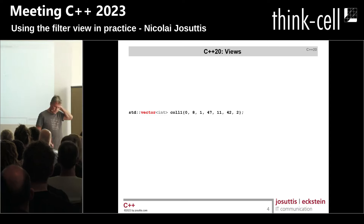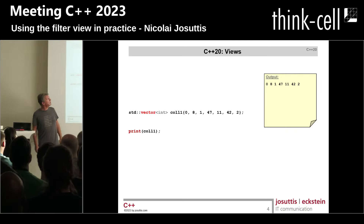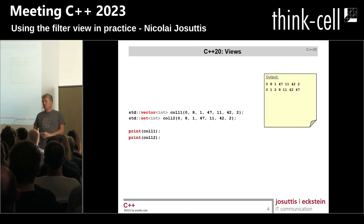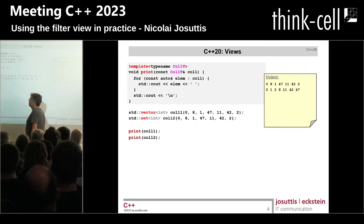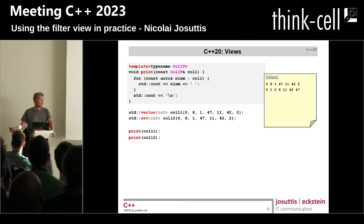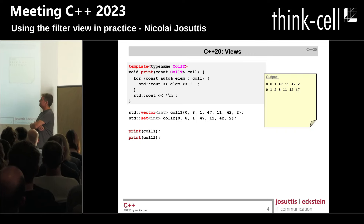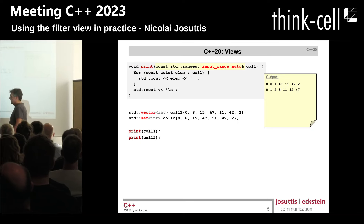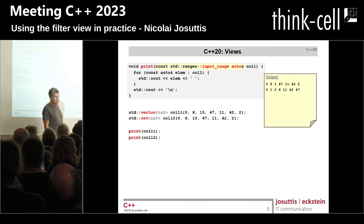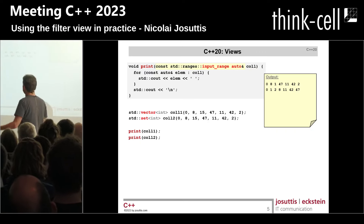So this is a vector — a container. Let's print the elements of this container. I have another container — let's use a set and print all the elements there. So far there are no views; that's just common code. We can enable this by having a print function that takes a template parameter, a generic collection, iterates over the elements, and prints them with a space and a newline at the end. In C++20, we can use auto qualified with constraints — like input range — instead of template parameters.